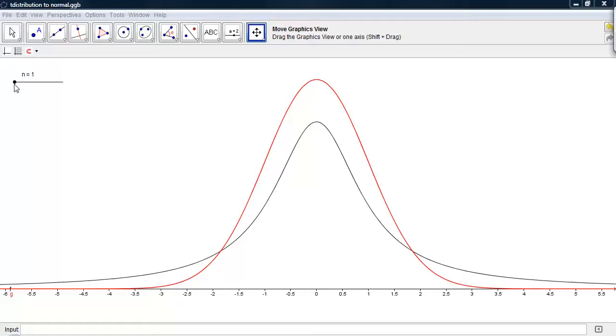The purpose of this demonstration is to show how the t-distribution approximates the normal distribution as the degrees of freedom increase.